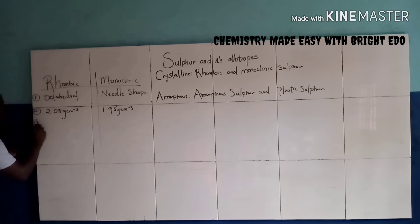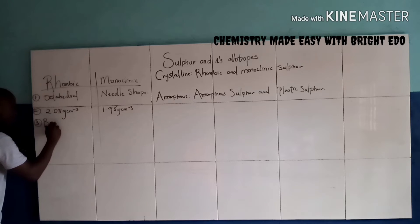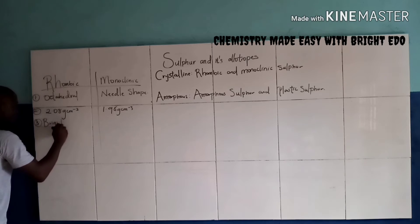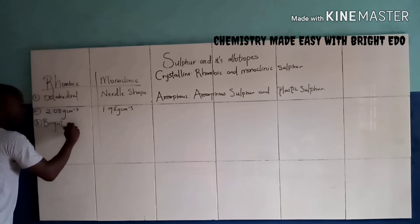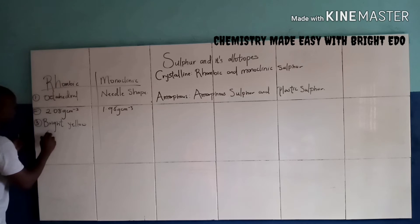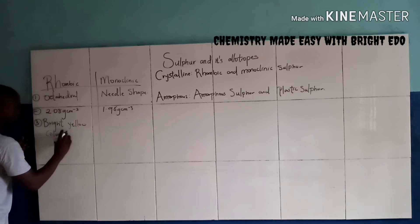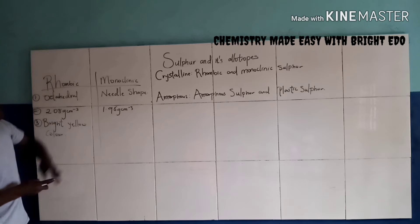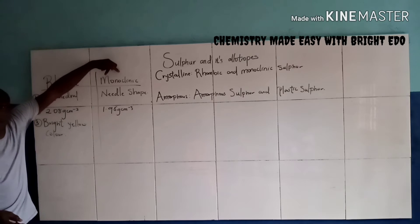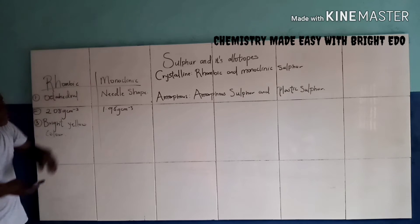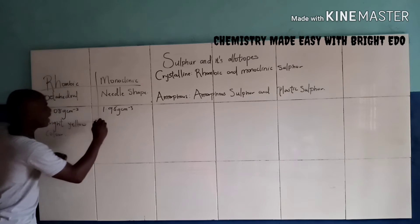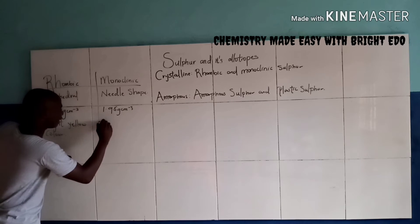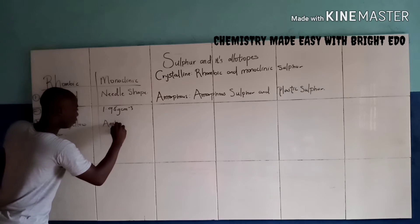Now let's talk about the color of Rhombic Sulfur. Rhombic Sulfur has a bright yellow color. Now for the Monoclinic Sulfur, it has an amber color.